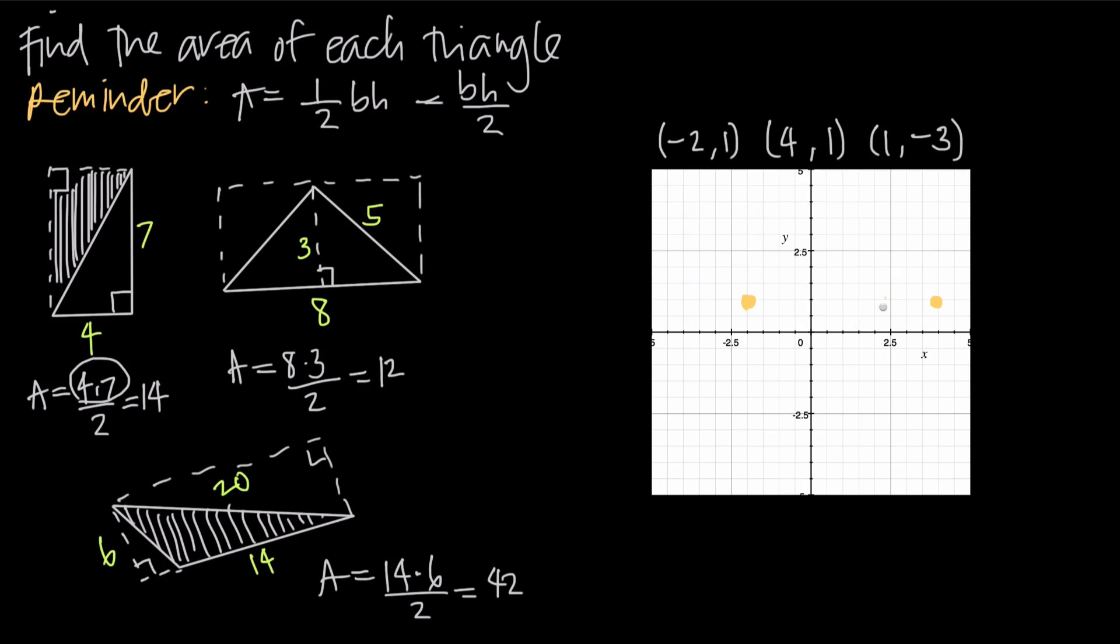Then we have the point 1, negative 3. So we come out to 1 and then down to negative 3, which will be this point right here. And then we can go ahead and connect these points to form a triangle, and this is what it looks like.